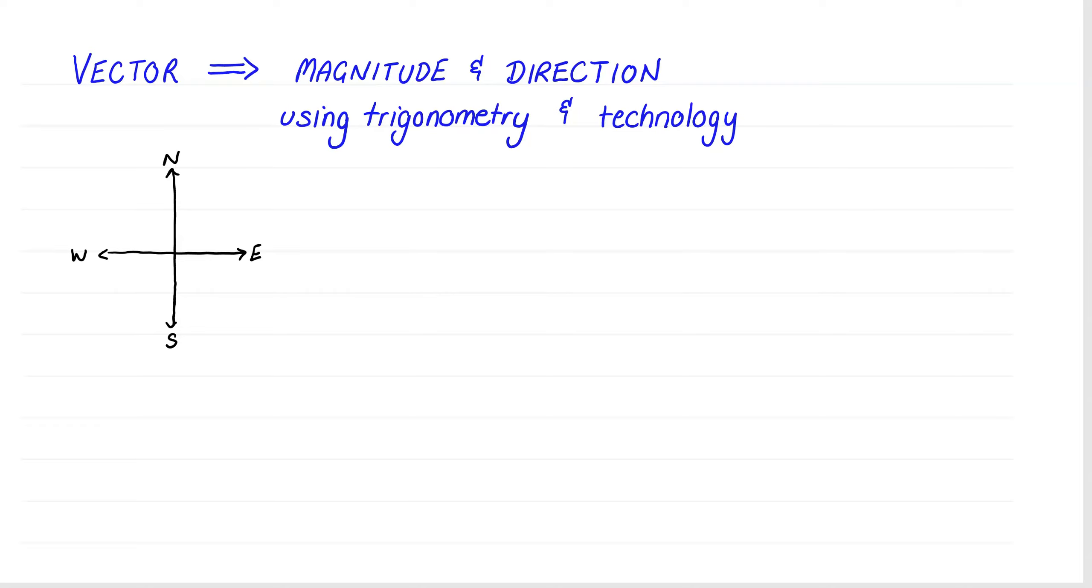In this video we're going to look at finding the magnitude and direction of a 2D vector. Now we already know how to find the magnitude, the length of a vector, and we're going to find the direction with the aid of trigonometry. And then your wonderful graphic calculators are going to show you how you could do it in one step to find that magnitude and direction.